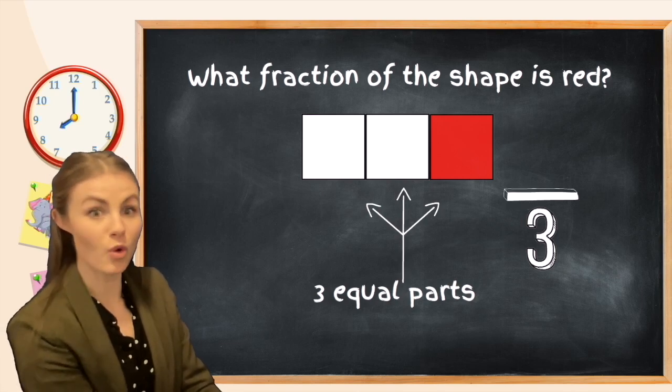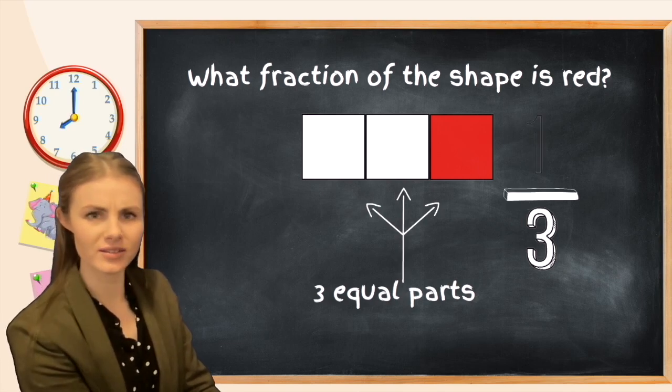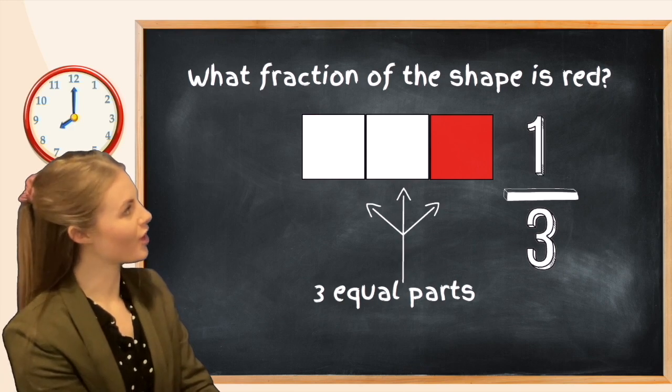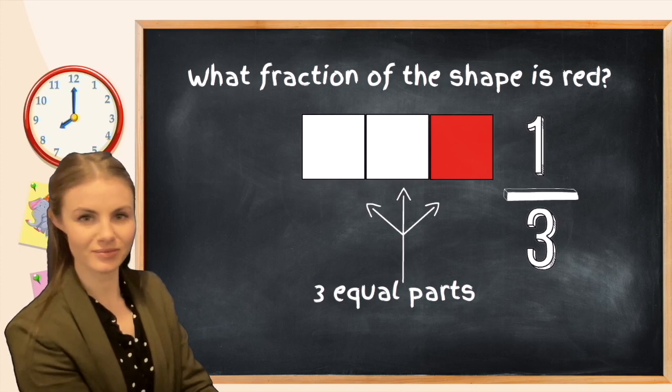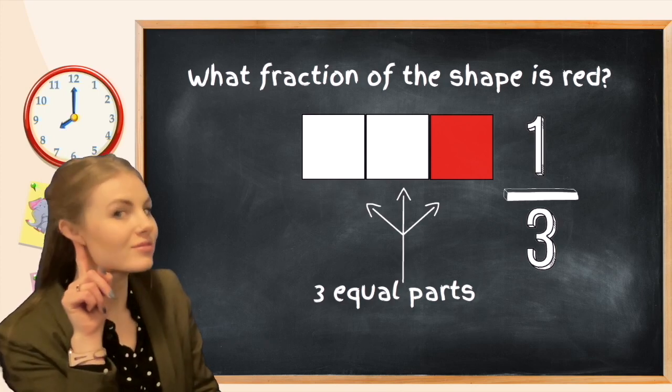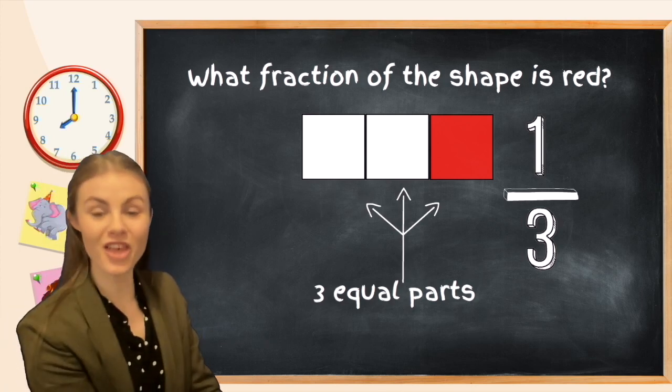And how many parts have been taken or have been colored? One. So we've got one over three. This is called a third. Can you say that nice and loud? That's right, a third.